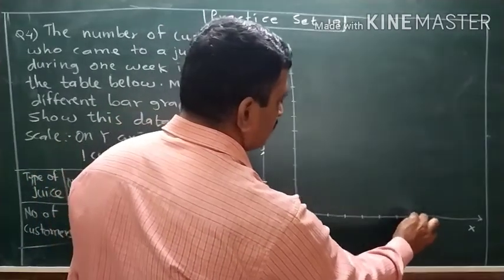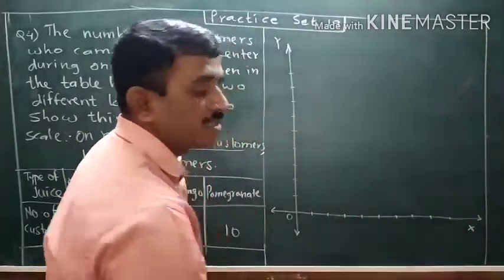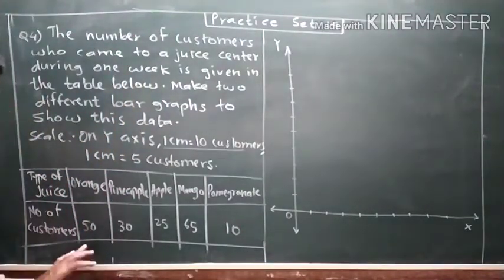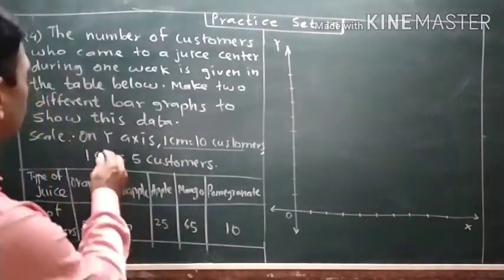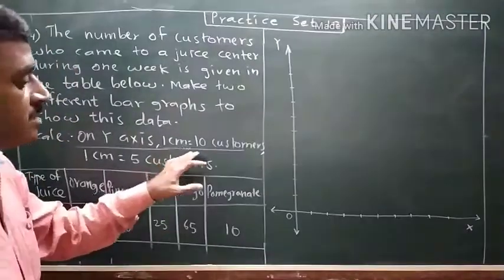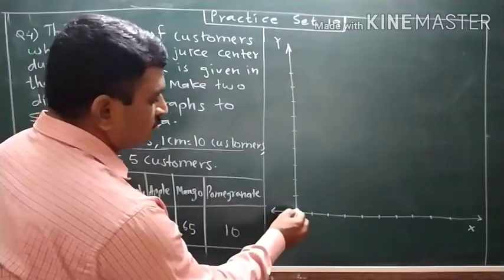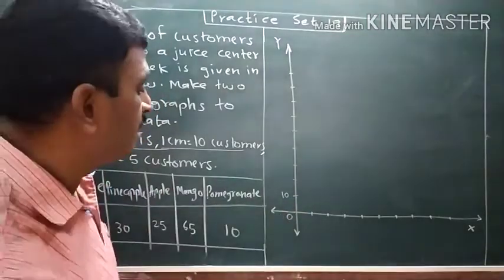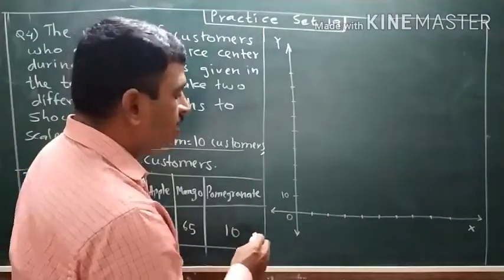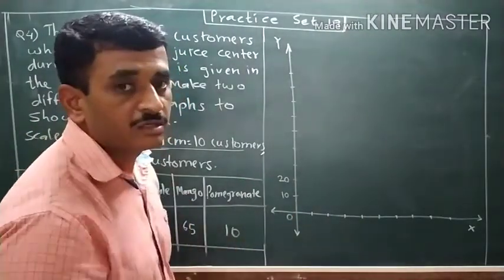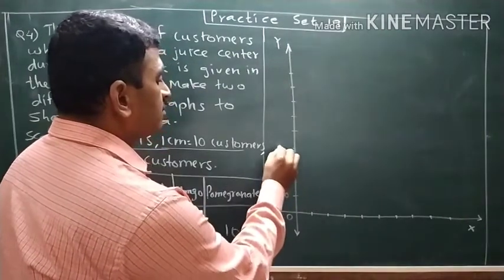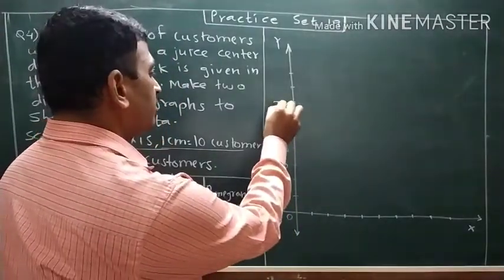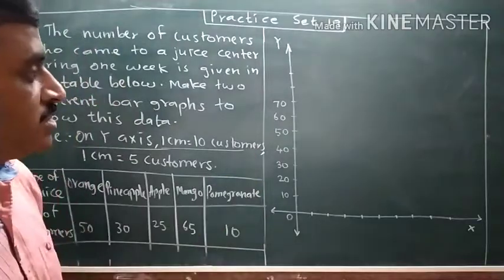There is a one centimeter dark line on the graph. Now, on the y-axis, the scale is: one centimeter distance equals ten customers. So counting up: ten, twenty, thirty, forty, fifty, sixty, seventy customers on the y-axis. These are the number of customers on the y-axis.